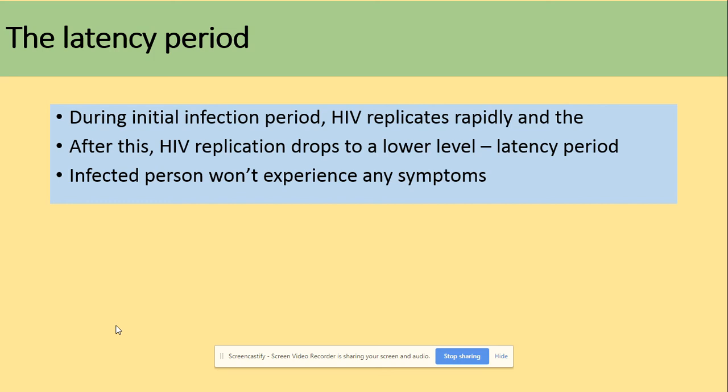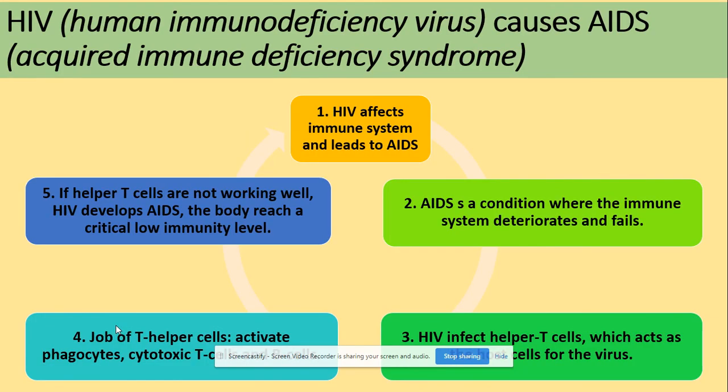What is the latency period? It is the time after initial infection when HIV can replicate rapidly. After this, HIV replication drops to a very low level, which is called the latency level. At this point the person will not experience any symptoms.